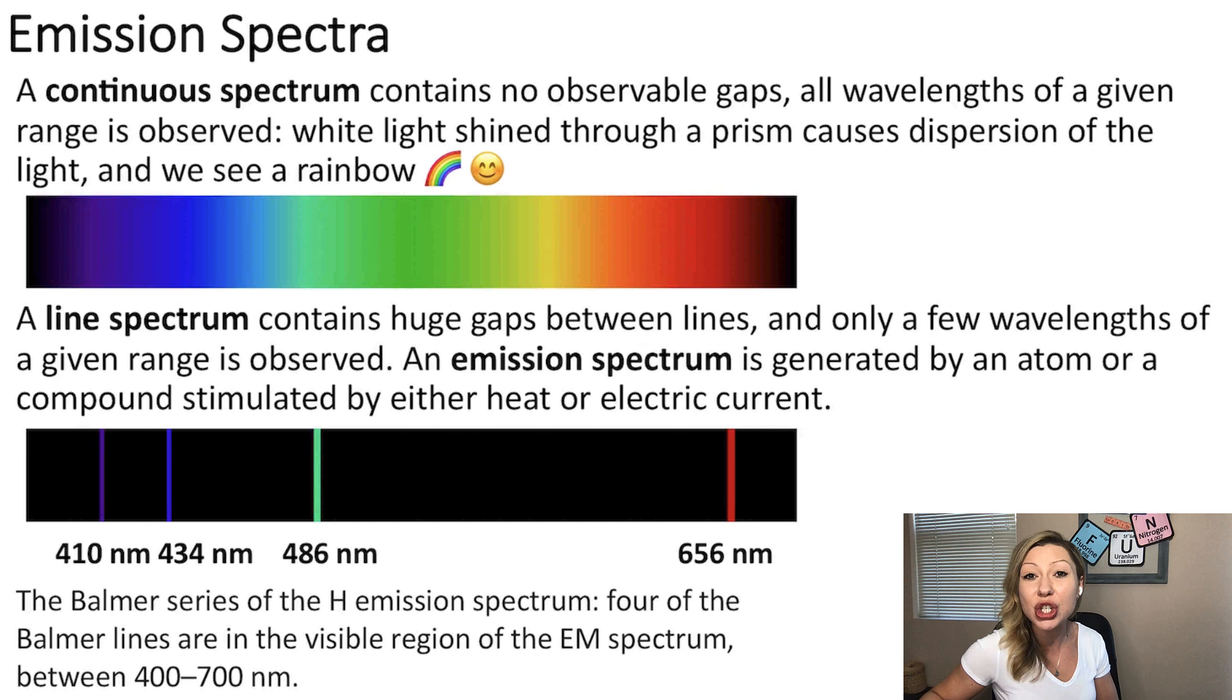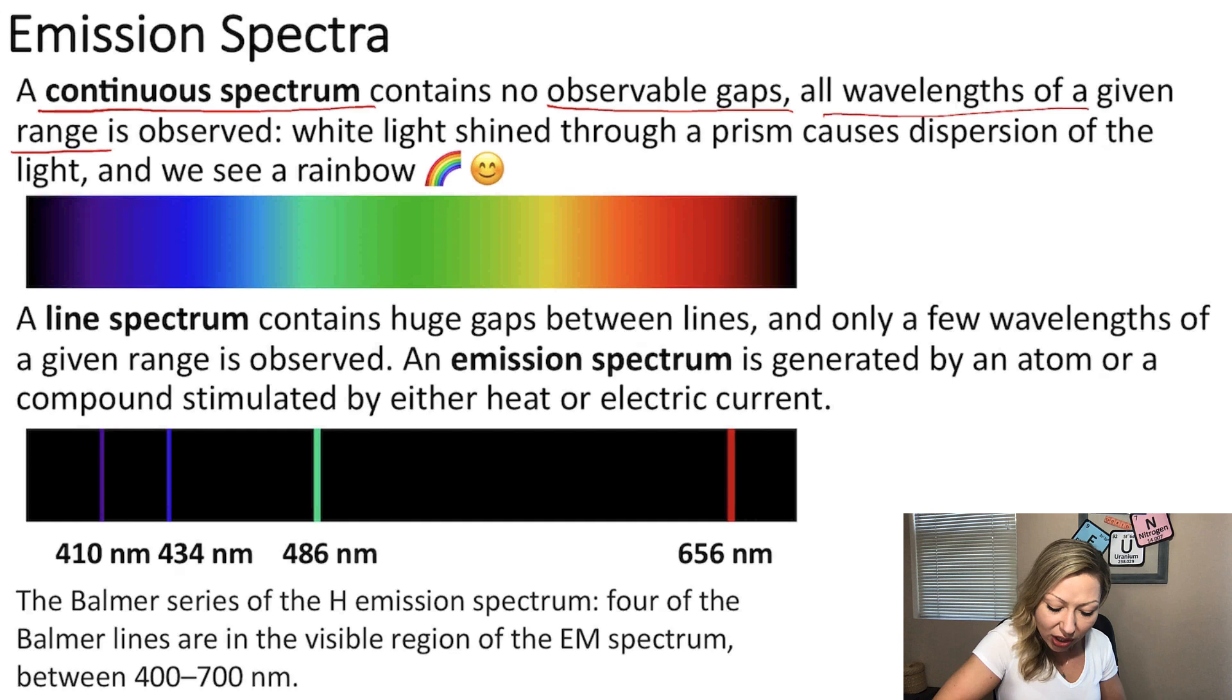But in order to understand emission spectrum, we first have to look at the so-called continuous spectrum. In a continuous spectrum, we are going to have no observable gaps and all wavelengths of a given range is going to be observed.